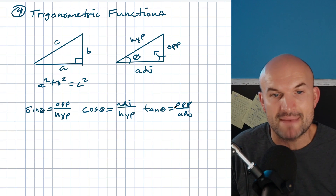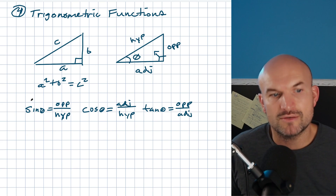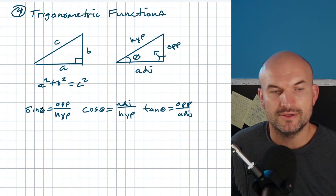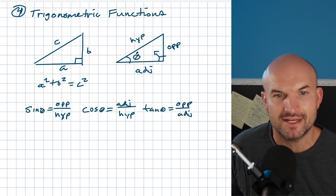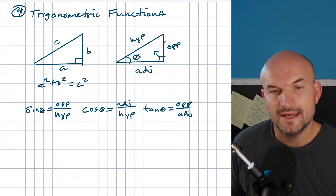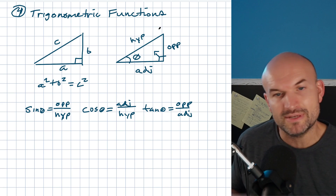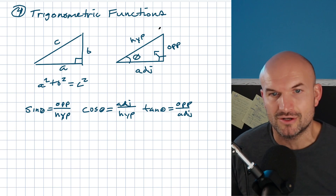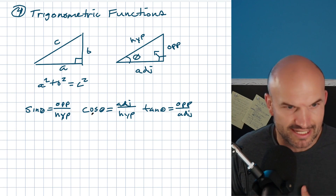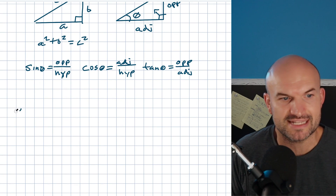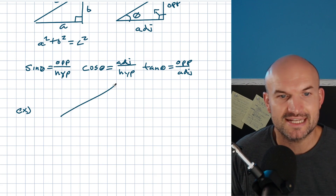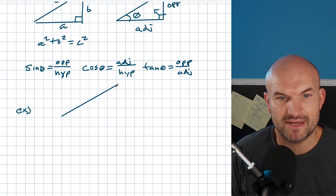The only difference — the thing that matters — is what angle we're referring to. You could be referring to cosine of angle theta or cosine of angle beta, and when we change the angle, the ratios are going to change. So let's take a quick look and do an example, and then we'll do some problems so you can see how this is going to be beneficial.